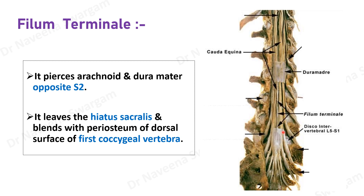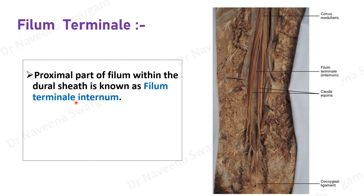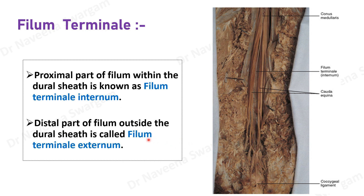The extension of the filum terminale is from the tip of the conus medullaris to the dorsal surface of the first coccygeal vertebra. Its course can be divided into two parts: the proximal part lies within the dural sheath, known as the filum terminale internum, whereas the distal part lies outside the dural sheath, known as the filum terminale externum, which is also called the coccygeal ligament.